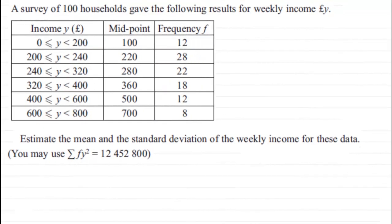Now this part of the question, we've got to estimate the mean and the standard deviation of the weekly income for these data. We're given this summary statistic that sum of, or Sigma FY squared, equals 12 million 452,800. If this is something you'd like to try, just pause the video and come back when ready and you can check your solution with mine.